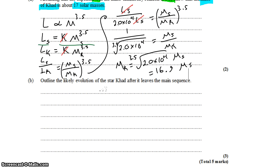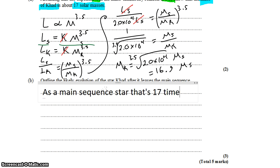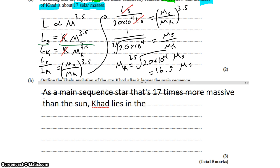The next question says to outline the likely evolution of CAD after it leaves the main sequence. So the first thing we might want to recognize here is that as a main sequence star that's 17 times more massive than the sun, CAD lies in the far upper left of the Hertzsprung-Russell diagram.